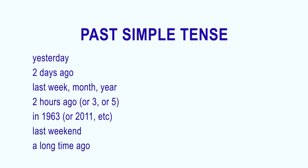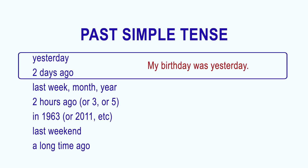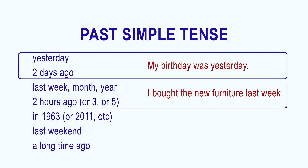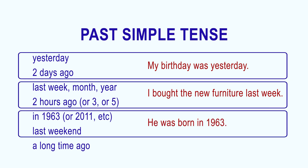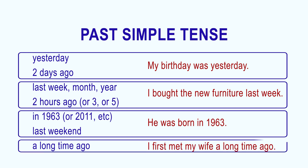For example: My birthday was yesterday. I bought new furniture last week. He was born in 1963. I first met my wife a long time ago.